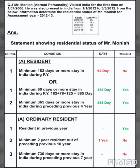Mr. Monish, an abroad personality, visited India for the first time on 1st July 2006. He was also present in India from 1st January 2012 to 3rd of March 2012. From the given information, determine the residential status of Mr. Monish for assessment year 2012-13.